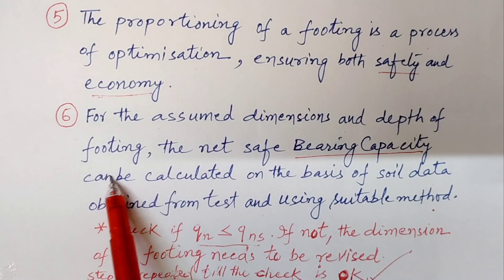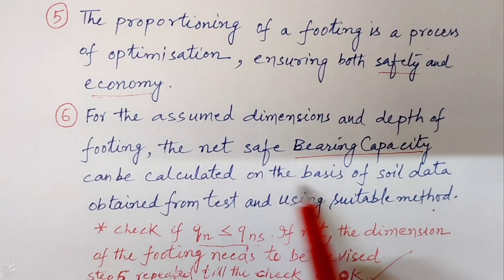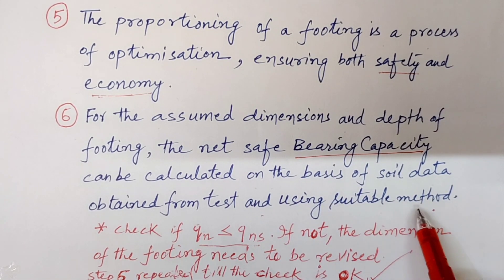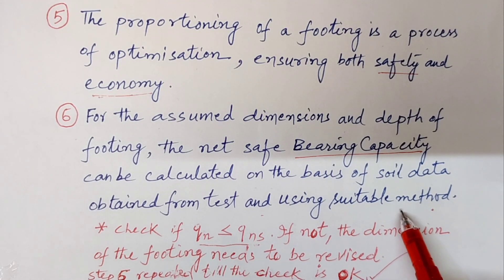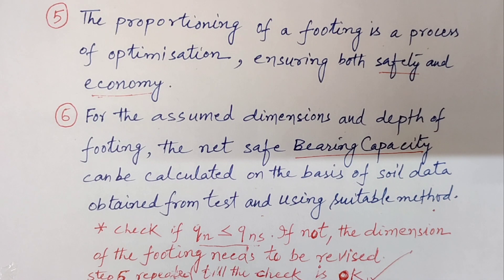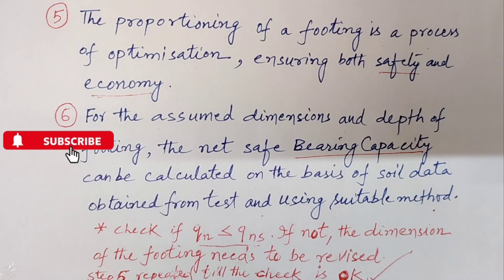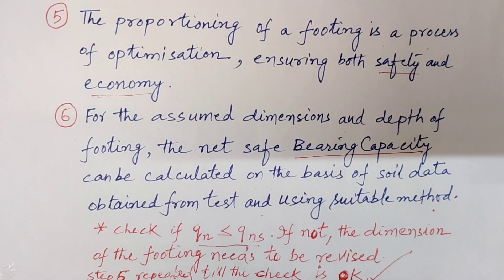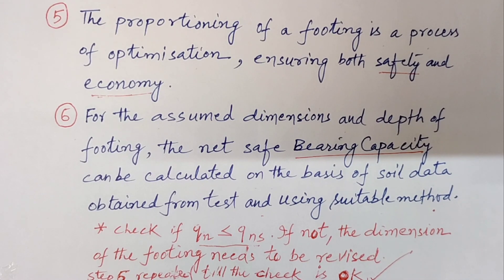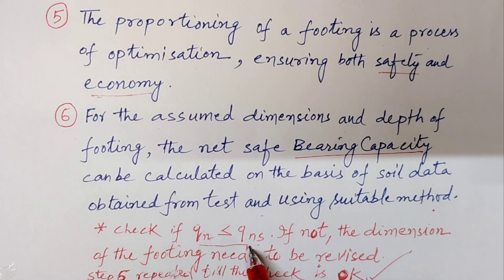For the assumed dimension and depth of footing, the net shape bearing capacity can be calculated on the basis of soil data obtained from tests using a suitable method. In granular soils, the standard penetration test (SPT) or the plate load test gives the data required. The N-value to be used is the average of the corrected N-values from the base of the footing up to a depth equal to the assumed width of the footing. For clay soil, the average undrained shear strength Cu, required as input in the bearing capacity equation, is obtained from laboratory shear tests on an undisturbed sample.